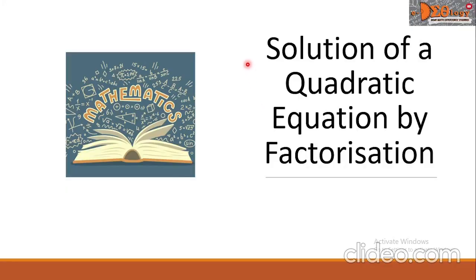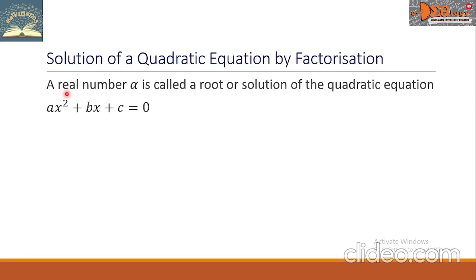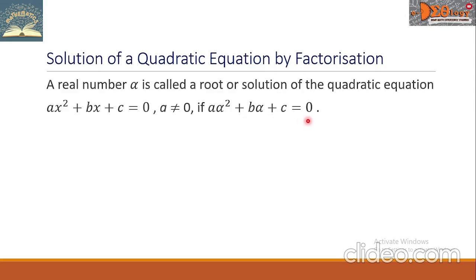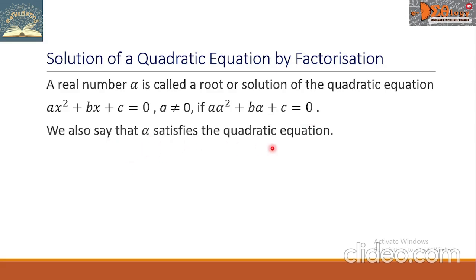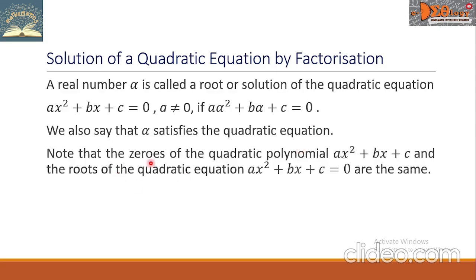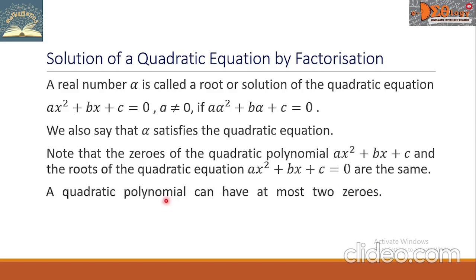Today we're going to study the solution of a quadratic equation by factorization. A real number alpha is called a root or solution of the quadratic equation ax² + bx + c = 0, where a ≠ 0, if a·α² + b·α + c = 0. We also say that alpha satisfies the quadratic equation. Note that the zeros of the quadratic polynomial ax² + bx + c and the roots of the quadratic equation ax² + bx + c = 0 are the same.